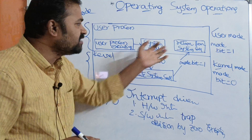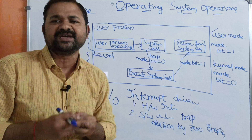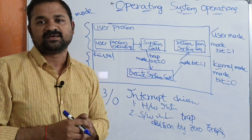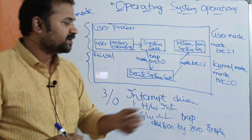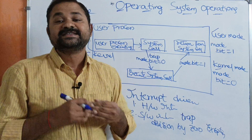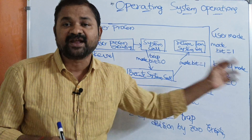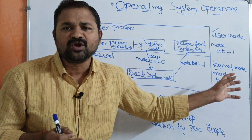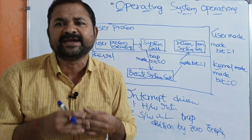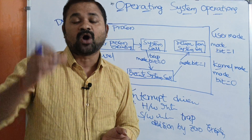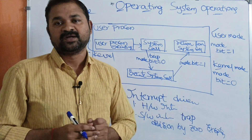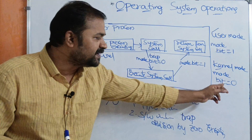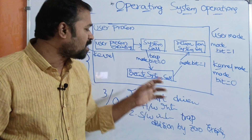Whenever the CPU receives an interrupt or system call, the mode bit will be changed from one to zero — because now the CPU has to execute the system call, which requires operating system service. Kernel mode can also be called system mode, operating system mode, supervisor mode, or privileged mode. It contains the most important instructions, so operating system instructions must be executed in kernel mode. The mode bit changes from one to zero, and the CPU starts executing the system call.